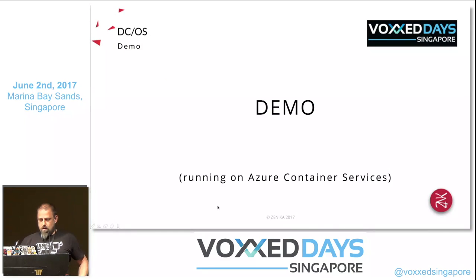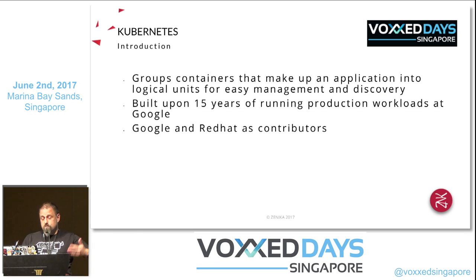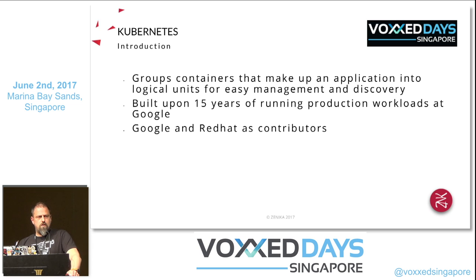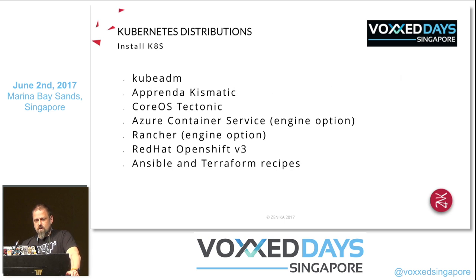Next: Kubernetes. This is software that allows you to group containers that form an application into logical units. It's built upon 15 years of running production workloads at Google — not the same software Google runs, but the same kinds of algorithms. Google and Red Hat are the two main contributors of Kubernetes. It's also sometimes abbreviated as K8s.